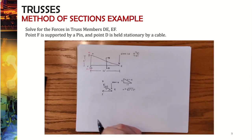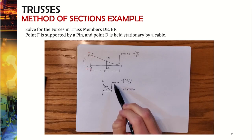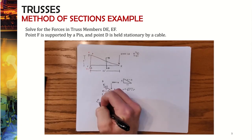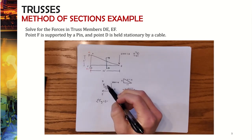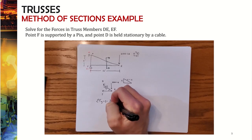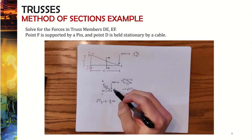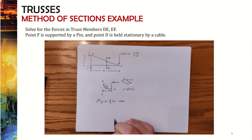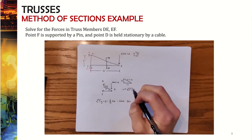To solve, we write sum of forces in X and sum of forces in Y. Since DE is the only member with a Y component alongside the 2,000 pounds, we do sum of forces in Y first. Setting that equal to zero: (5/13)·DE − 2,000 = 0. Solving gives DE = 5,200 pounds.